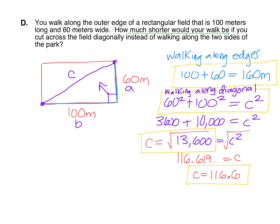So we have to take the distance of walking along the edges, which was 160, subtract that 116.6. And putting that into a calculator, we have 43.4 meters shorter.